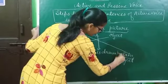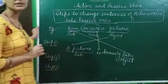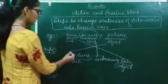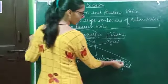And then we will use the preposition 'by'. So in this way, we are going to change the active voice into the passive forms. A picture is drawn by Ram.